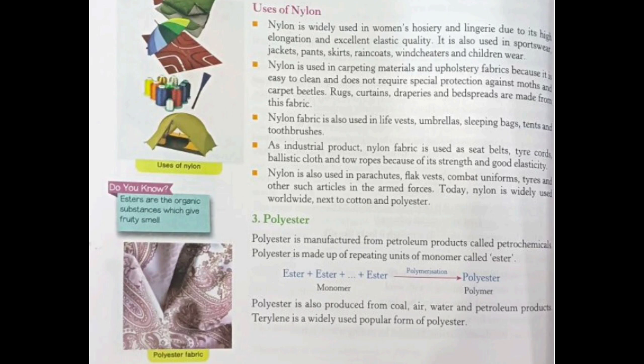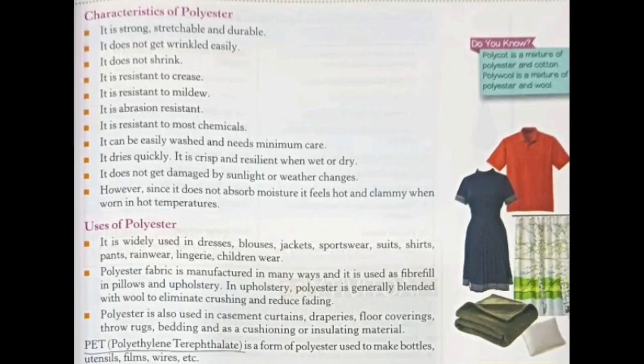Nylon is quite strong and elastic, very light in weight, and absorbs less water, making it easy to wash. Many household items are made of nylon, including swimwear, ropes, toothbrushes, and saris and dress materials of cheaper but strong quality.